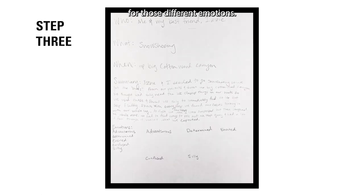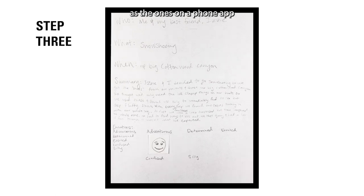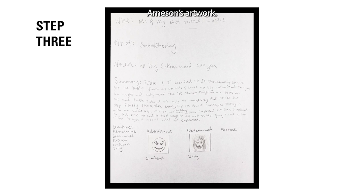After you've written the summary down, tell the story to a partner, making sure to refer to your notes if needed. Take turns sharing your stories. After you've finished telling both of your stories, work with your partner to list the different emotions the main characters in each story went through. Now design emojis for those different emotions. These emojis can be as simple and abstract as the ones on a phone app, to as detailed as Arneson's artwork. This is your artistic vision, so it can express the emotion however you want. For extra inspiration, feel free to make and photograph exaggerated versions of the faces with your partner.